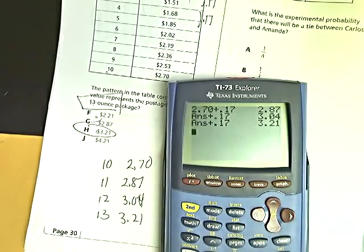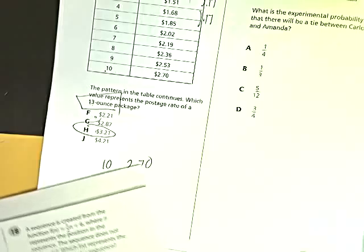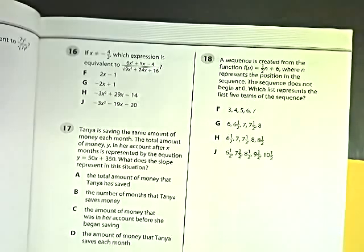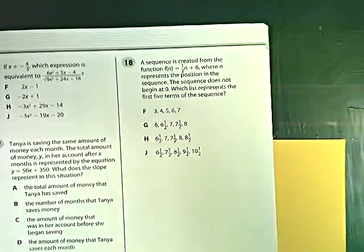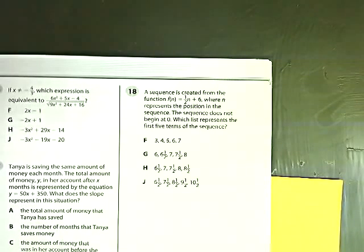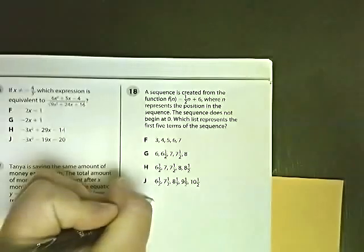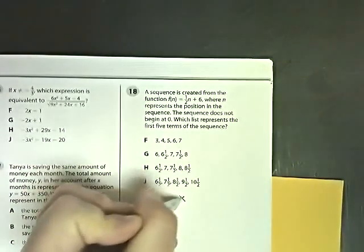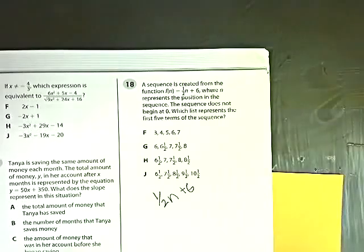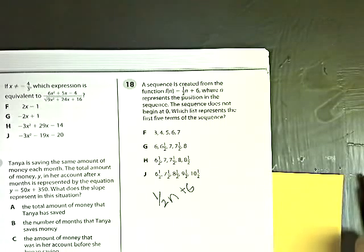Now, the problem I would like you to do is right here, number 18. A sequence is created from the function 1½n plus 6, where n represents the position in sequence. The sequence does not begin at 0. So here's the sequence. It's 1½n plus 6. And I'll bring that down just a little bit. That's the sequence right there. So the sequence doesn't begin at 0. You've got about a minute and a half to figure out what the first five terms in sequence are if it does not start at 0.